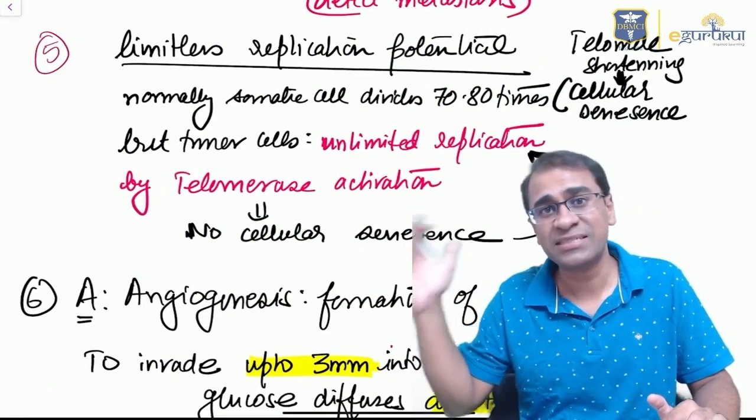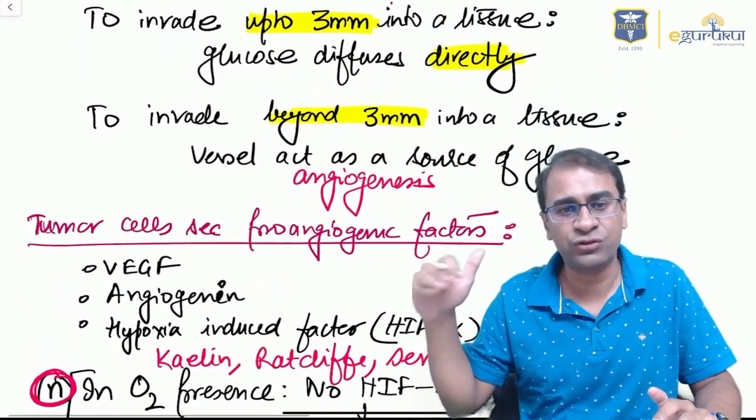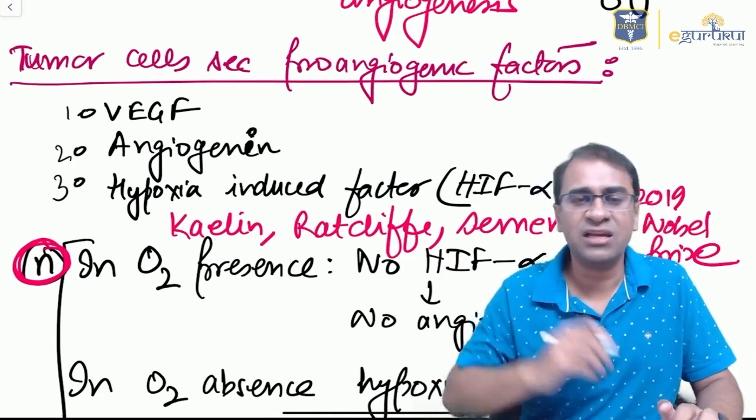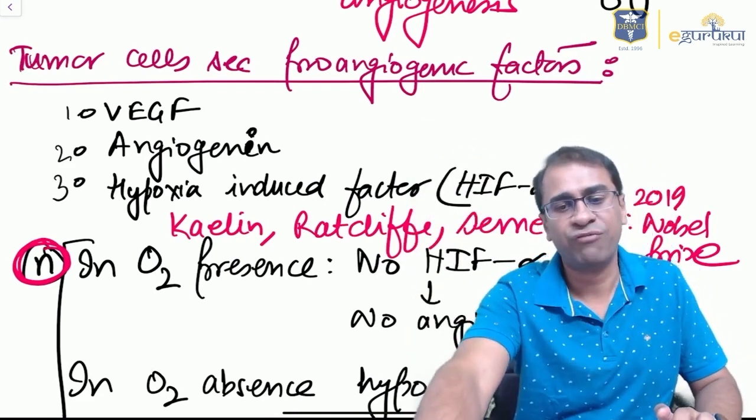Then comes angiogenesis. What you need to know is there are three pro-angiogenic factors: VEGF, angiopoietin, and hypoxia-induced factor, which is very important.